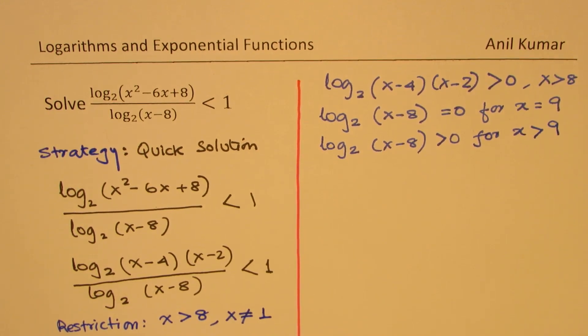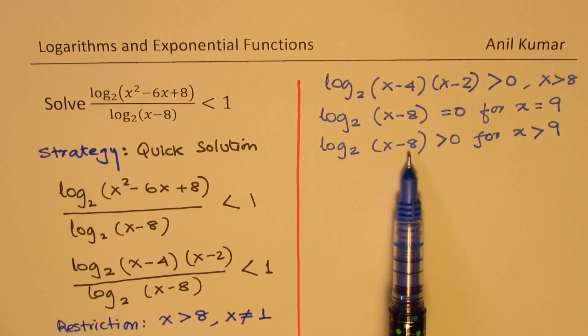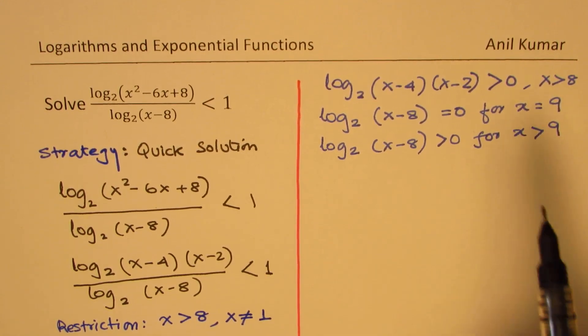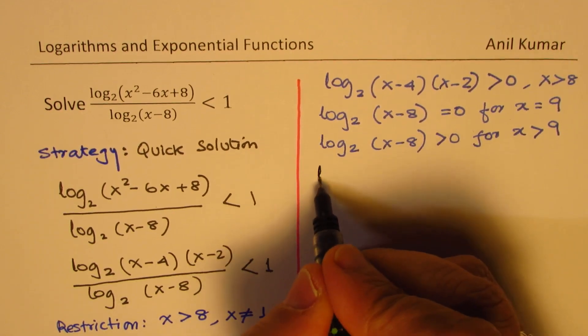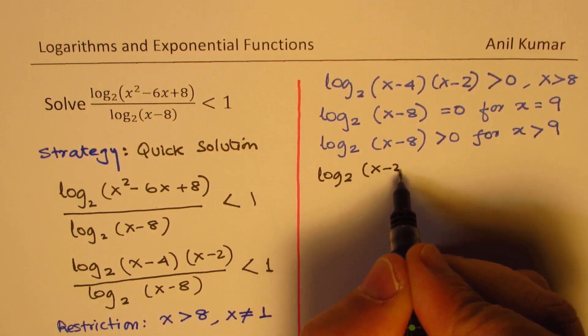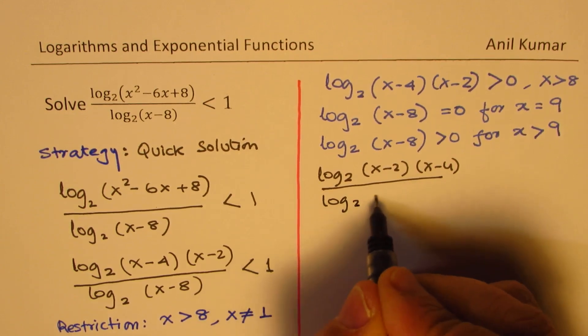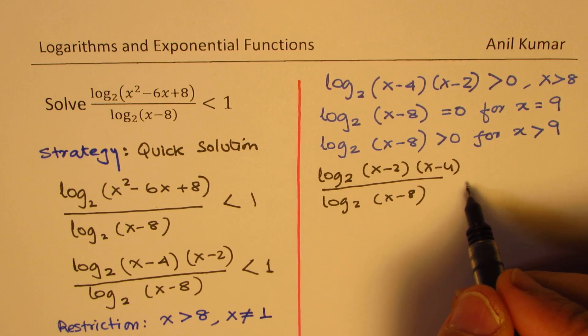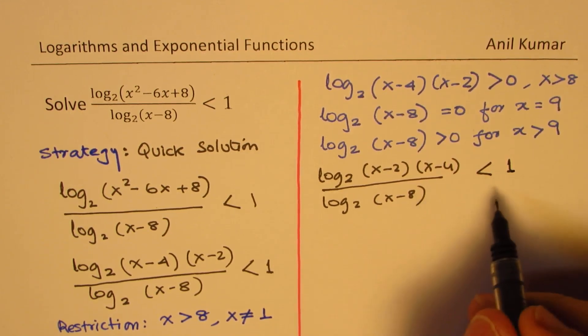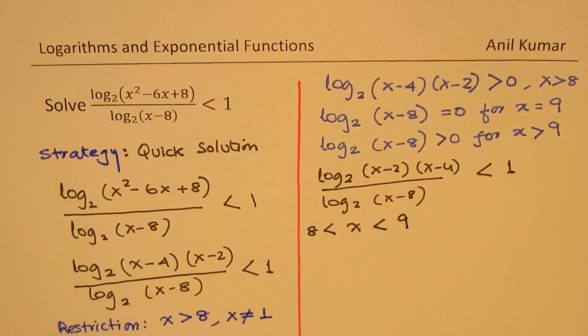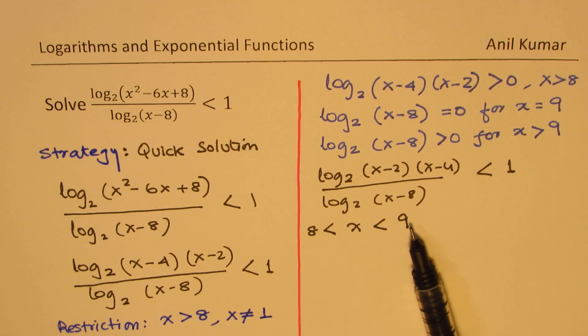So it becomes positive for sure. So from here, clearly, you get an idea that between 8 and 9, you have your solution. So that means that the whole function log base 2 of (x - 8) is actually less than 1 for x between 8 and 9. That means that it becomes negative for sure.